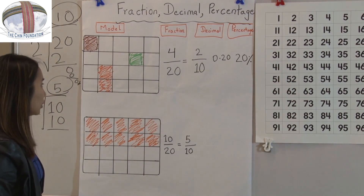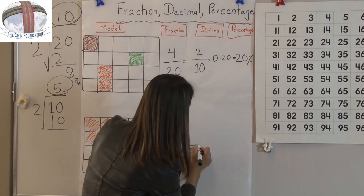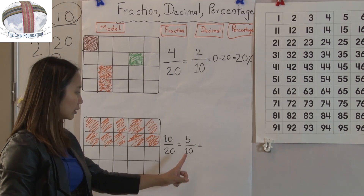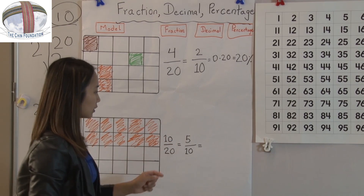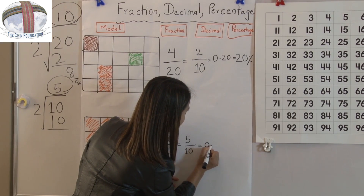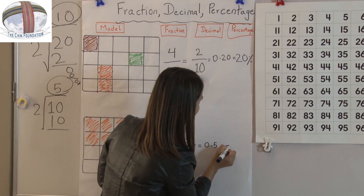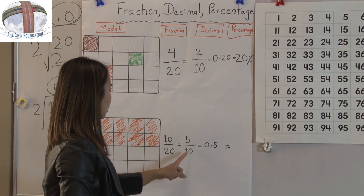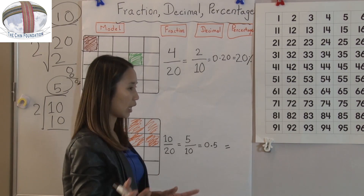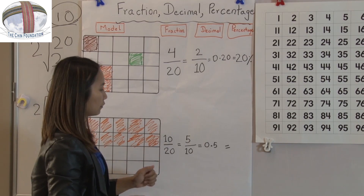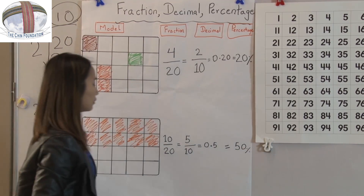Now we need to write decimal and percentage. Always remember, you just need to pay attention on the numerator when you write the decimal. The numerator is 5, so I need to put 0.5. You can even add a trailing zero if you want — that's fine. 5 out of 10 means when we do percentage, we do it with 100, so 50 out of 100. That means 50 percent.